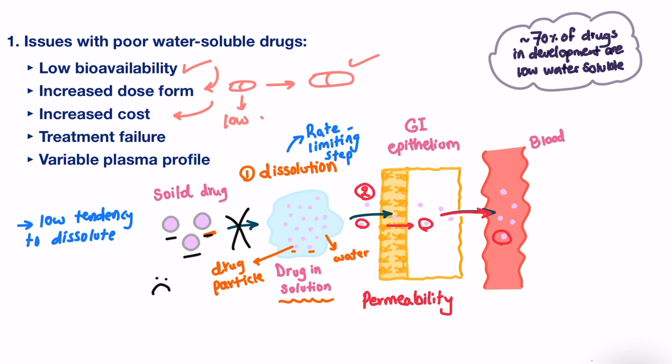Otherwise, if we stick with the low dose of a drug, it will not result in enough concentration in the blood and at the site of action. Therefore, it leads to therapeutic failure. And since these drugs are poorly water-soluble, they could be affected by situations like pH and food that either increases or decreases their absorption, resulting in variable plasma profile.